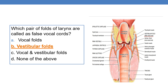Which pair of folds of the larynx are called as false vocal cords? We know that the larynx is called as voice box. The larynx has two pairs of folds: false vocal cords and true vocal cords. The vestibular folds are called as false vocal cords. In this diagram, you can see the vestibular folds with the label 'false vocal cords' in brackets, and below them the white vocal cords.